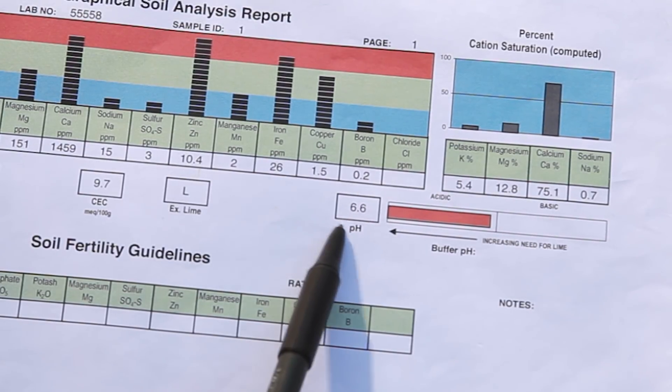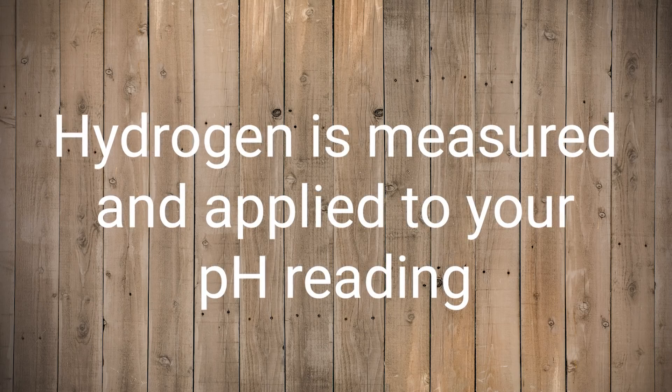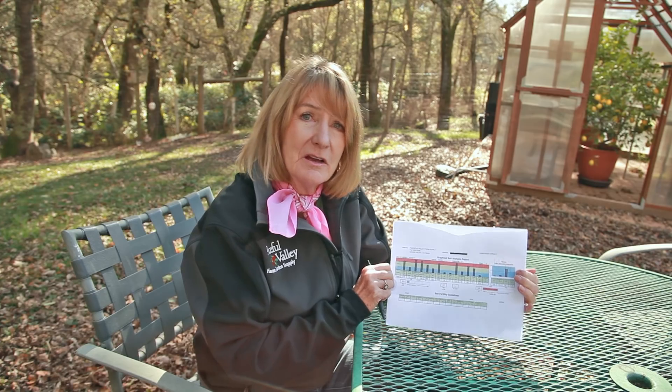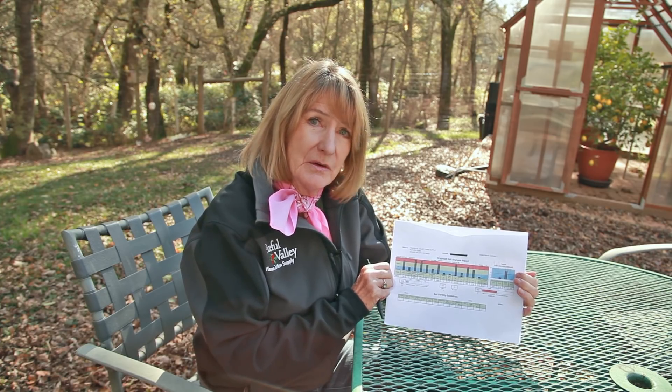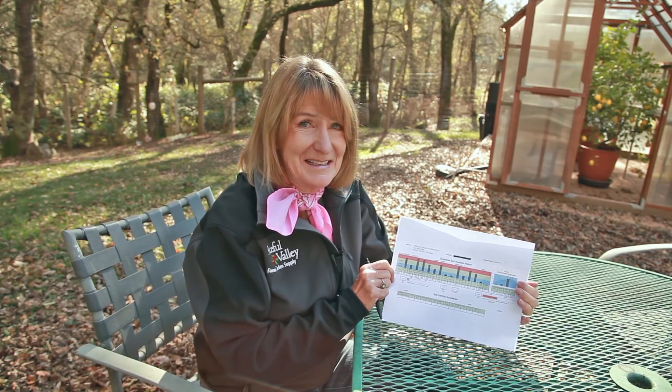Ideally, potassium will be 4 to 7%, magnesium 10 to 20%, calcium 65 to 75%, and sodium less than 3%. The balance left will be the percentage of hydrogen, which is measured as pH. Because they're a ratio, changing the values of one by adding fertilizer, for example, will have an effect on all of the other values. So before adding anything, take a few more things into consideration.